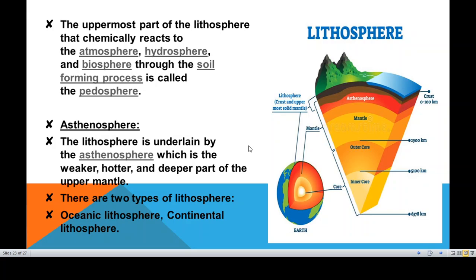Another concept studied alongside tectonic plates is continental drift — how different land areas got separated from each other. The asthenosphere has a major role in the movement of tectonic plates. Because it is weak in nature — not very rigid — it is hotter and deeper. Due to the high temperature, the minerals in the asthenosphere are in a molten state, making that area very weak in its structure.